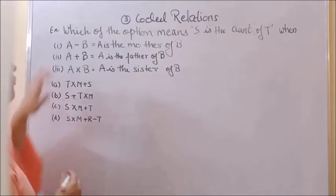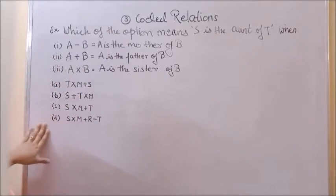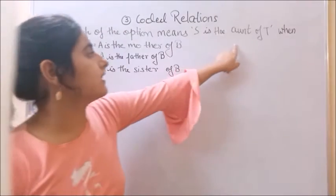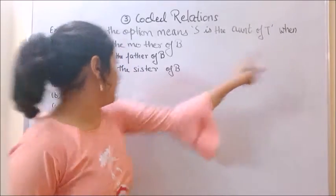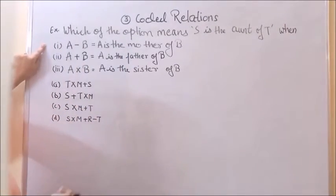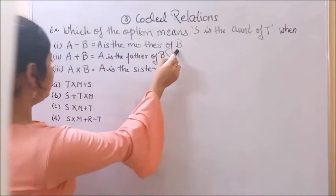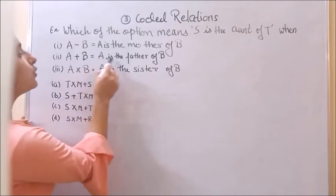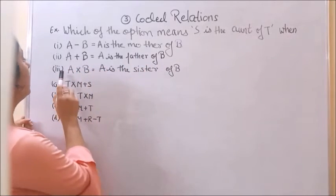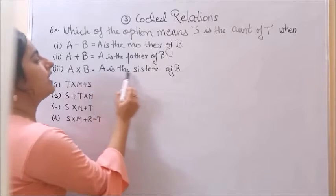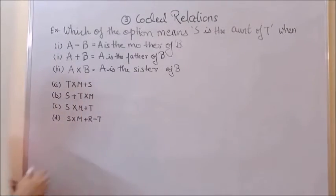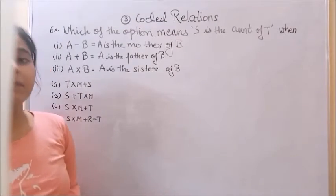Our next example is: which of these options means S is the aunt of T? When A minus B equals A is the mother of B, A plus B equals A is the father of B, A into B equals A is the sister of B. These are the options.